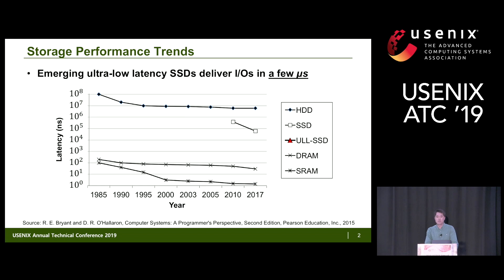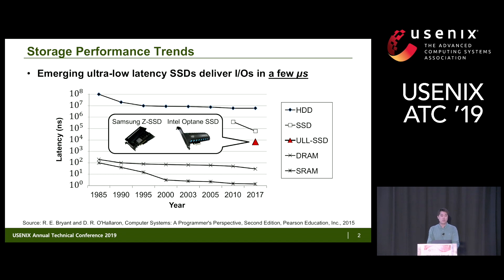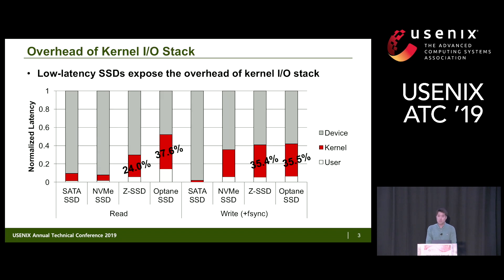Today's SSDs are really fast. Typical flash-based SSDs are an order of magnitude faster than traditional disk. Emerging ultra-low-latency SSDs such as Samsung GSSD and Intel Optane SSD are ultra-fast — they can deliver a single I/O in a few microseconds, which is several orders of magnitude faster than disk. With these ultra-low-latency SSDs, the kernel I/O stack becomes overhead in the total I/O latency.